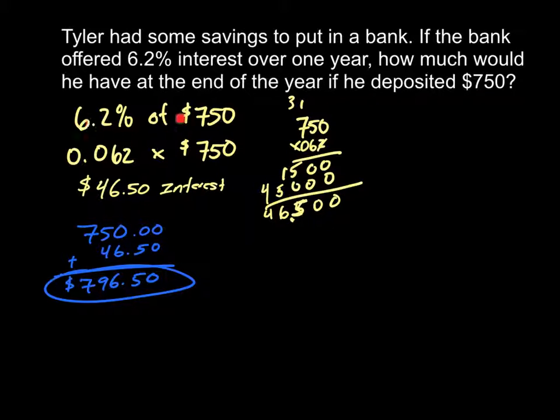Start with your three-word sentence, 6.2% of $750. Change your 6.2% to a decimal. Make sure that it is actually 6.2% and not 62%. That makes a difference. Times $750. And when you multiply it out, you get $46.50 as the interest.